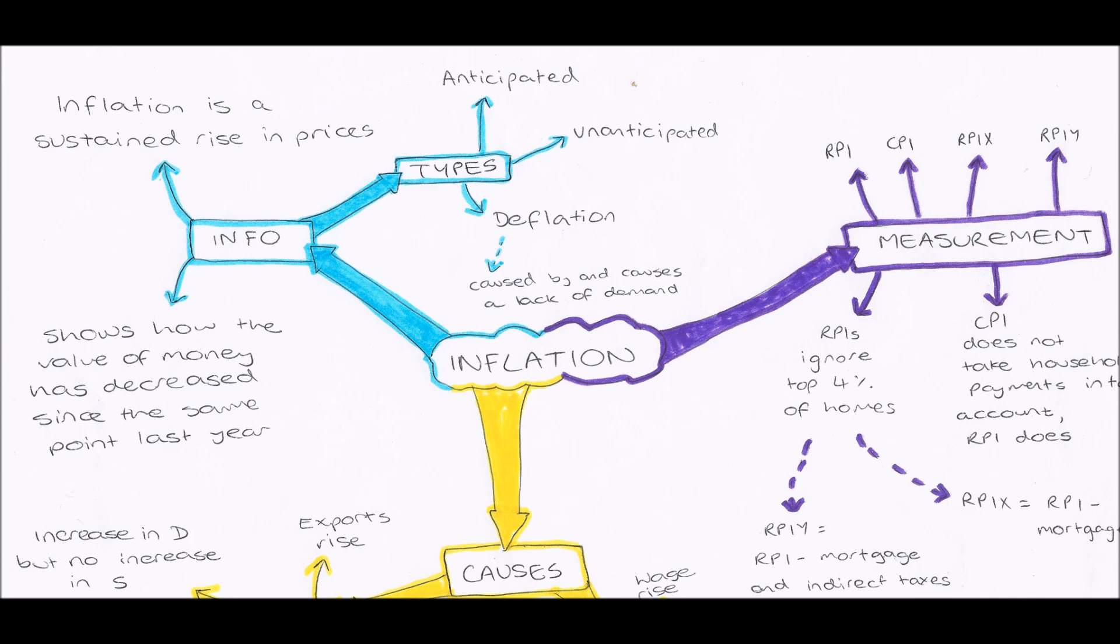I'll use an example to explain this. So if the price of a Freddo is 20p and I have a pound, I can buy five Freddos. However, if the price of a Freddo goes up to 25p, so inflation has occurred because prices have risen.